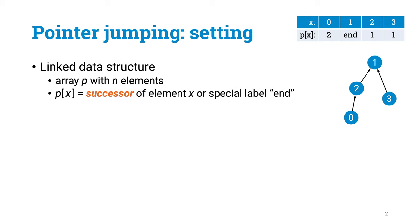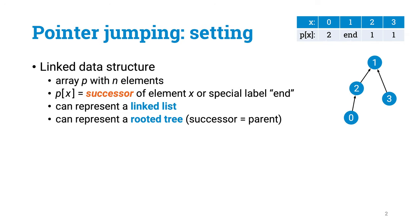It's usually easiest to think about it so that your data structure is stored in some array p. Here p[x] indicates which element is the successor of x. For example, in this illustration, the successor of element 0 is element 2, and the successor of element 2 is element 1, and element 1 doesn't have any successor. You can use this kind of an array to represent for example linked lists or rooted trees.